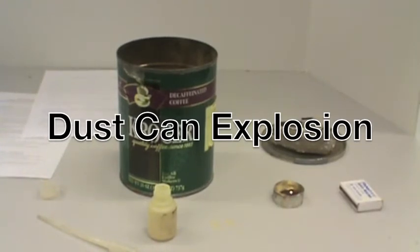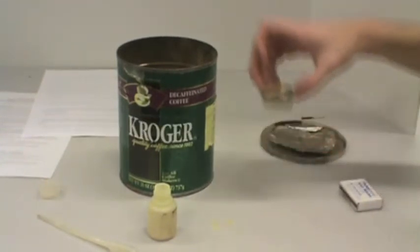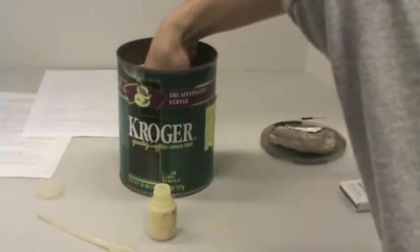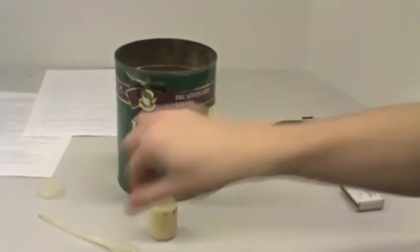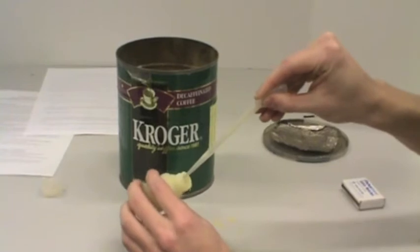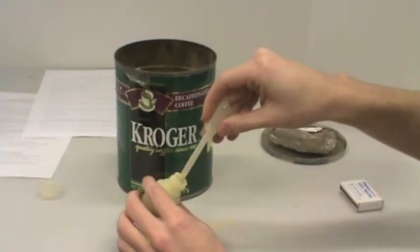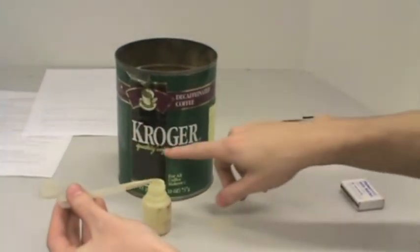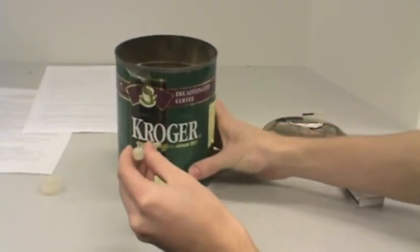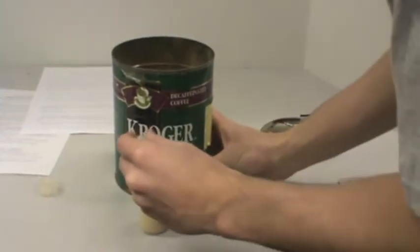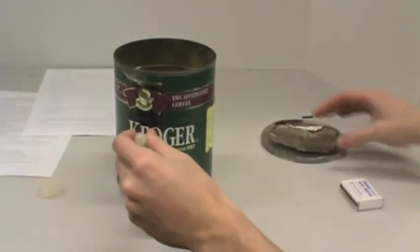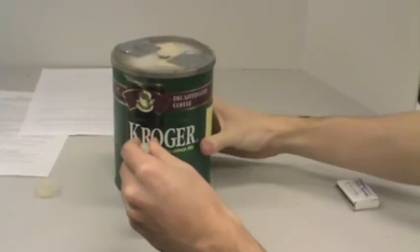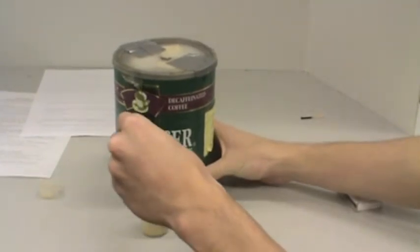Demonstration. Light the tea light candle and place it in the coffee can. Load the pipette with a small amount of dust powder. Show the students the hole in the side of the can. Holding the pipette at a 30 degree angle, place the pipette in the hole. Place the lid on the can. Squeeze firmly on the pipette and leave the pipette in the hole after squeezing.